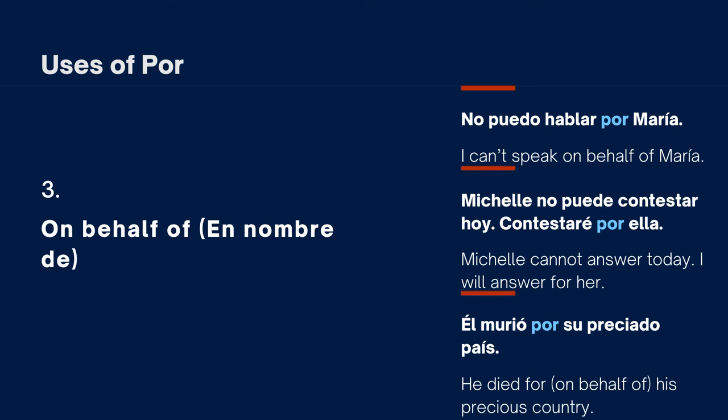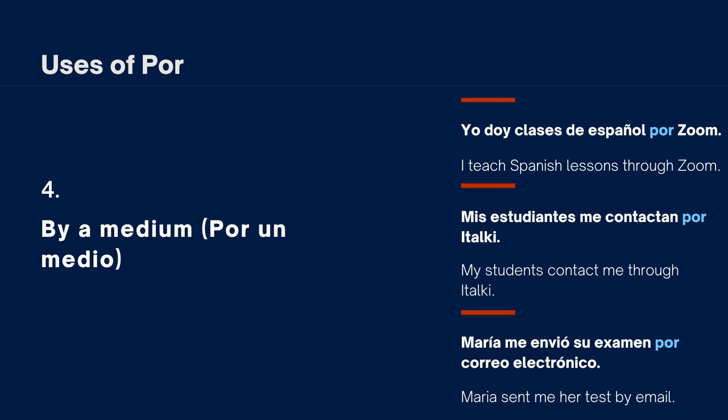The fourth use of por is by a medium — por un medio. Examples: 'Yo doy clases de español por Zoom' (I teach Spanish lessons through Zoom, the platform I use for online lessons); 'Mis estudiantes me contactan por italki' (My students contact me through italki); 'María me envió su examen por correo electrónico' (María sent me her test by email). These show por used with platforms or communication channels.